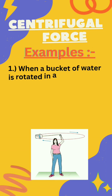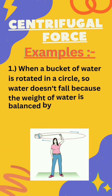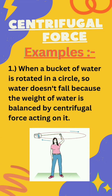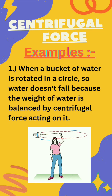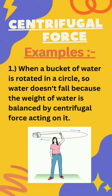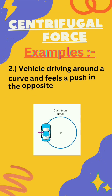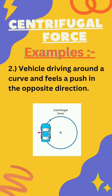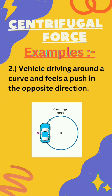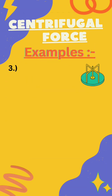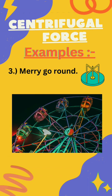A few examples: first, when a bucket of water is rotated in a circle, the water doesn't fall because the weight of the water is balanced by the centrifugal force acting on it. Second, a vehicle driving around a curve feels a push in the opposite direction. Third, a merry-go-round, etc.